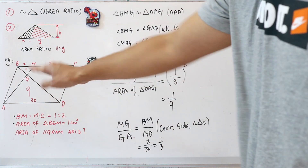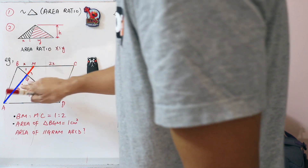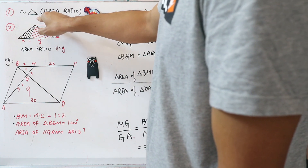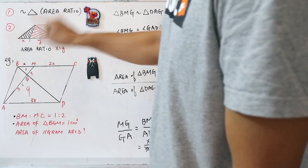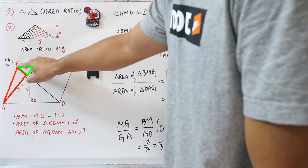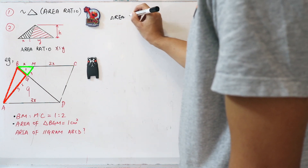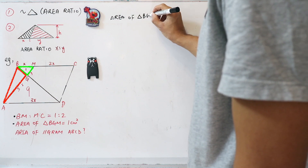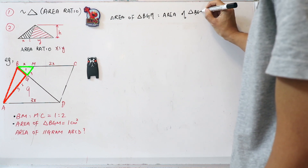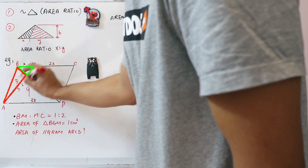Showing this on the figure, MG to GA is 1 to 3. Applying the second key concept, the base of triangle ABG relative to triangle BMG is 3 to 1, so the area ratio is also 1 to 3. Since the area of triangle BGM is 1, the area of triangle BGA is 3.